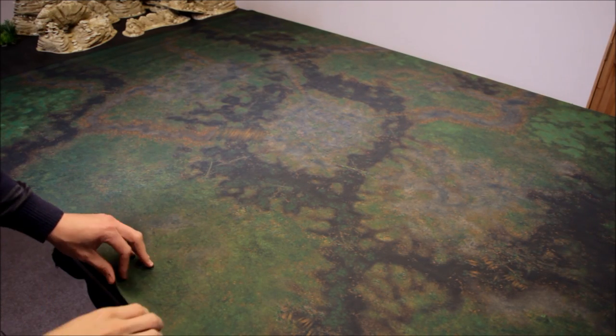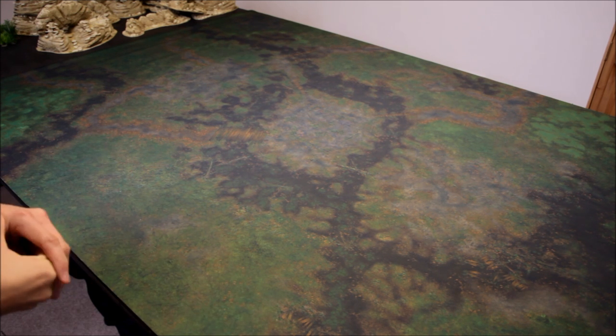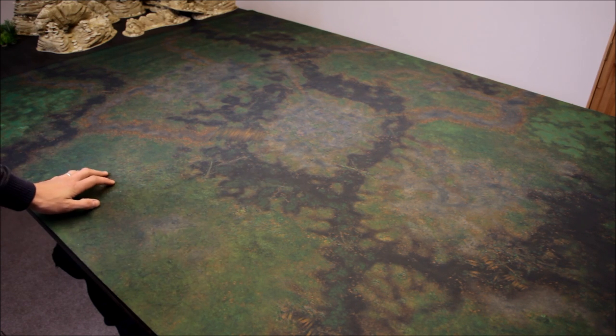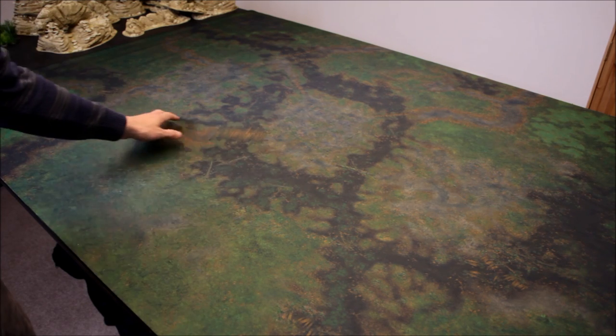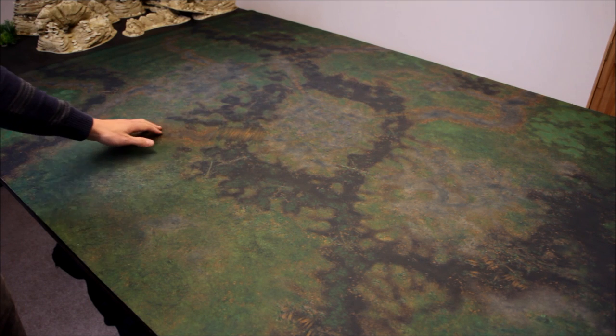Right, so there it is, 6x4 as I said, so it's perfect for your games of Warhammer 40,000. So what we've got here is this dappled mottled green effect. There are sort of stone areas across the table as well, around here in the middle there's a faint outline of some ruins, some rocky areas, and you've got these paths.